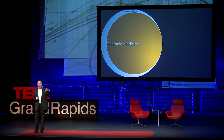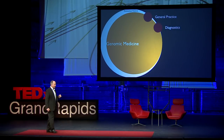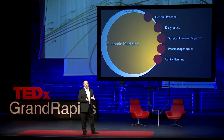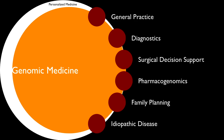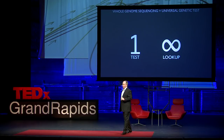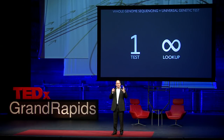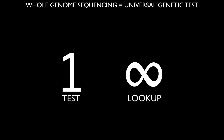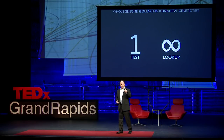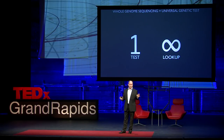Genomic medicine actually forms the largest component of personalized medicine, and it concerns the order and organization of the A's, C's, G's, and T's. It's important to understand that genome sequencing is a universal genetic test, and the real promise of genomic medicine relies on genome sequencing. Your genome — the order of those A's, C's, G's, and T's — is fixed at fertilization. From that moment to your last breath, they're not going to change. So we sequence the genome one time, and we refer to that data set over and over throughout your lifetime to help improve the quality of medicine.